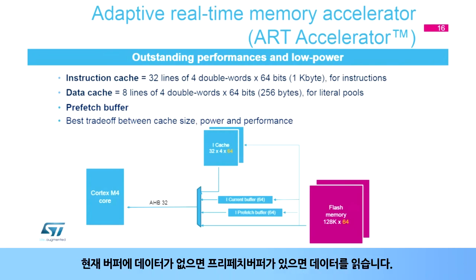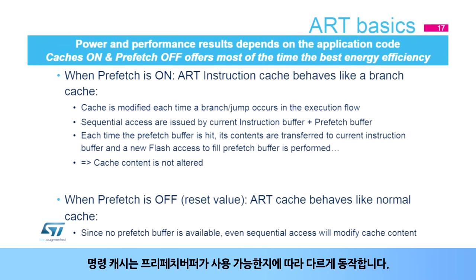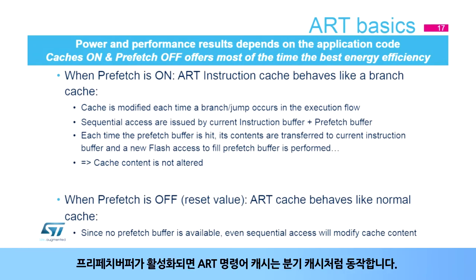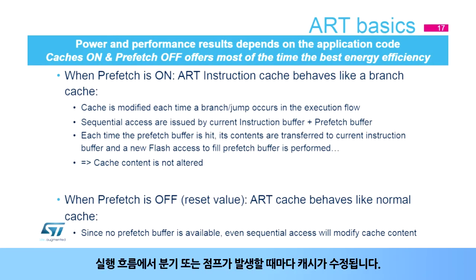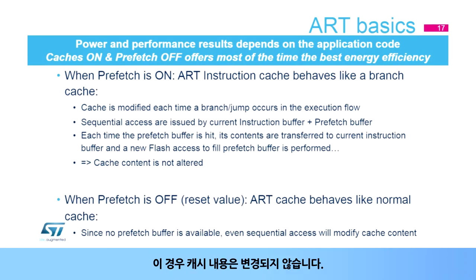If the data is not present in the current buffer, it is read from the prefetch buffer if present. If not, it is read from the instruction cache if there is a cache hit; otherwise, a flash access is performed. The instruction cache behaves differently depending on whether or not the prefetch buffer is enabled. If the prefetch buffer is enabled, the ART instruction cache behaves like a branch cache — the cache is modified each time a branch or jump occurs in the execution flow. Sequential accesses are issued by the current instruction buffer and the prefetch buffer. Each time the prefetch buffer is hit, its contents are transferred to the current instruction buffer and a new flash access is performed.